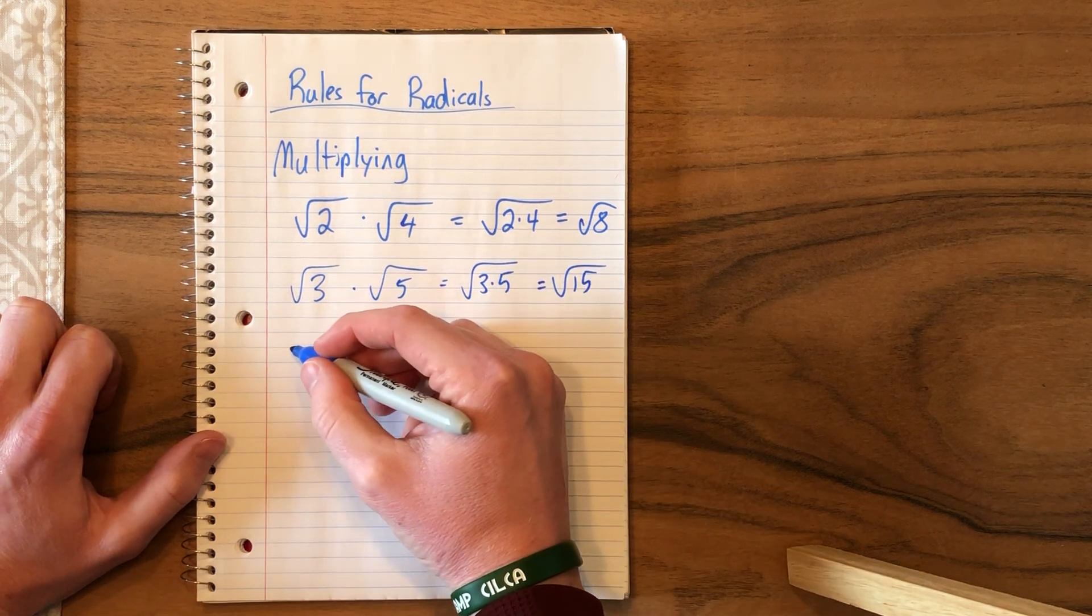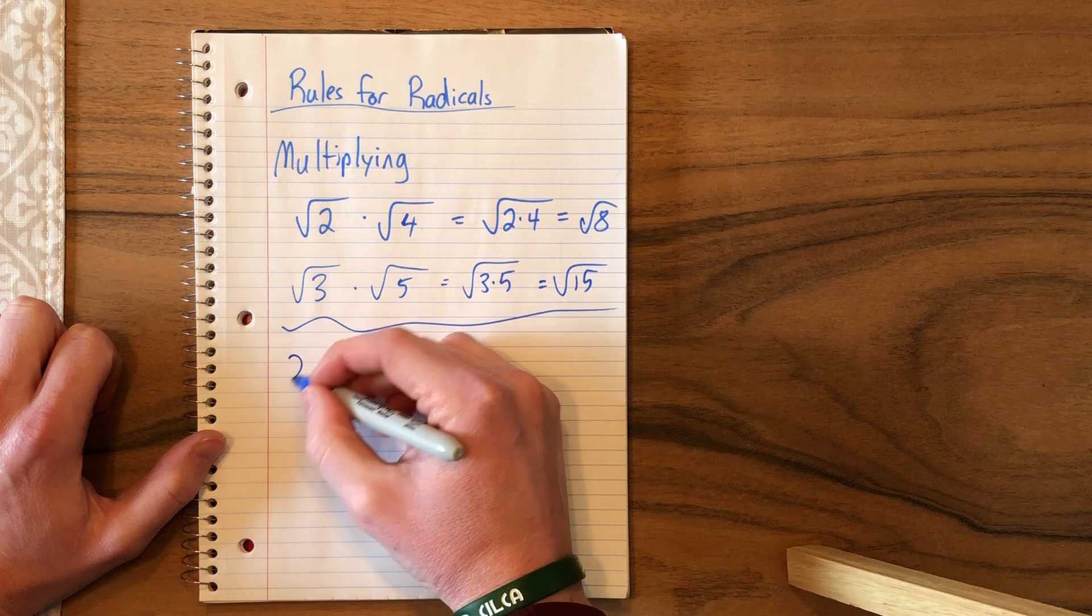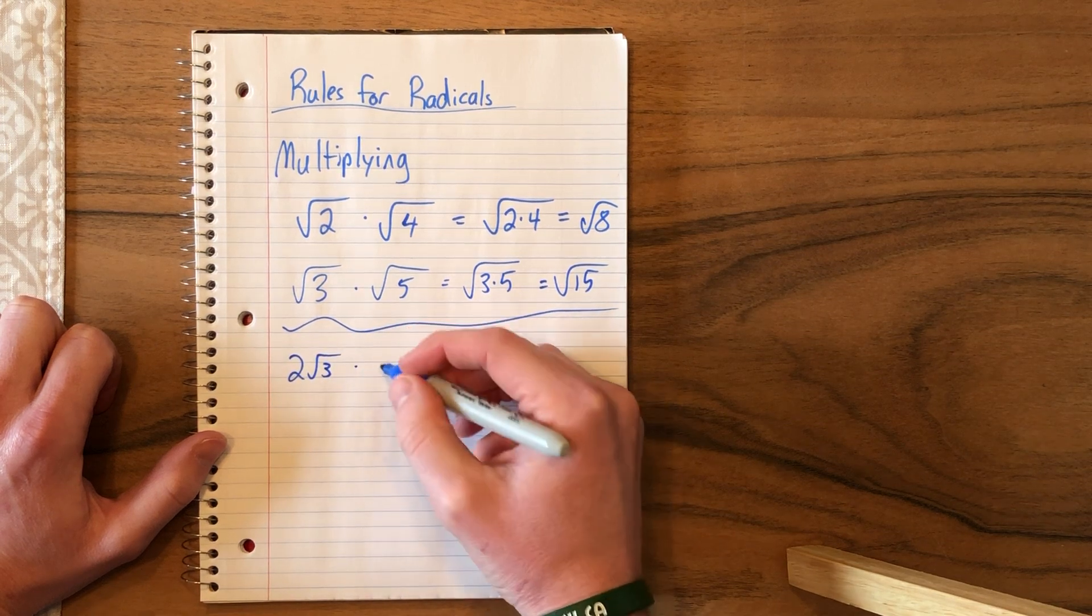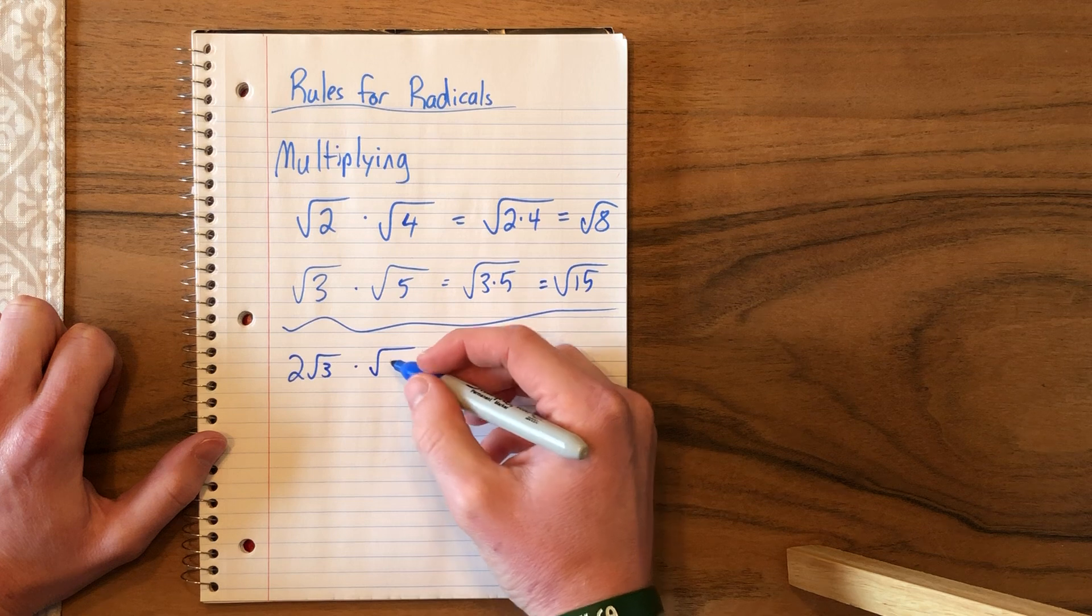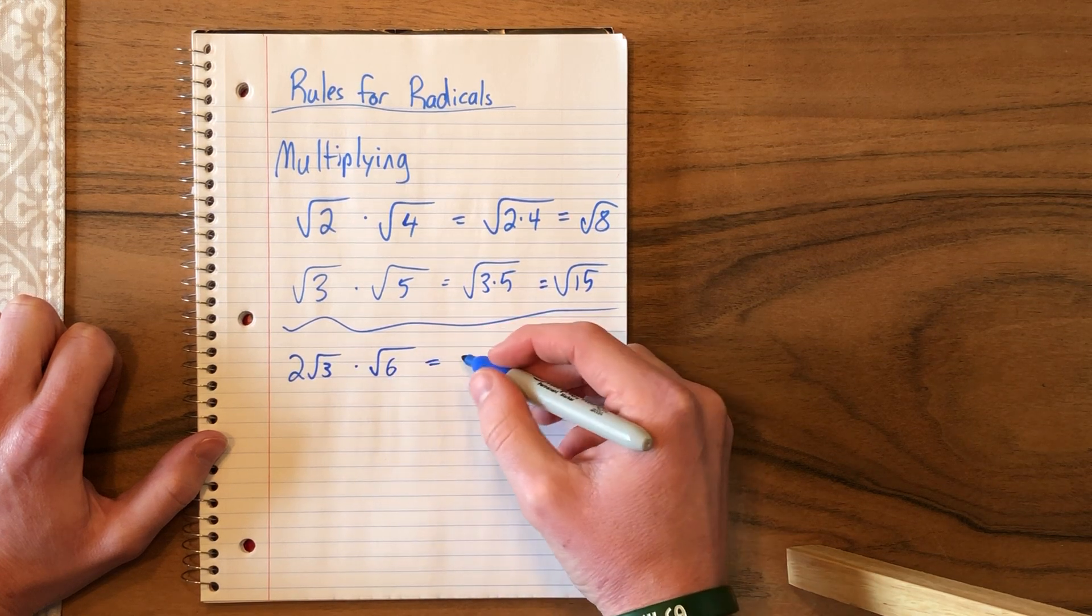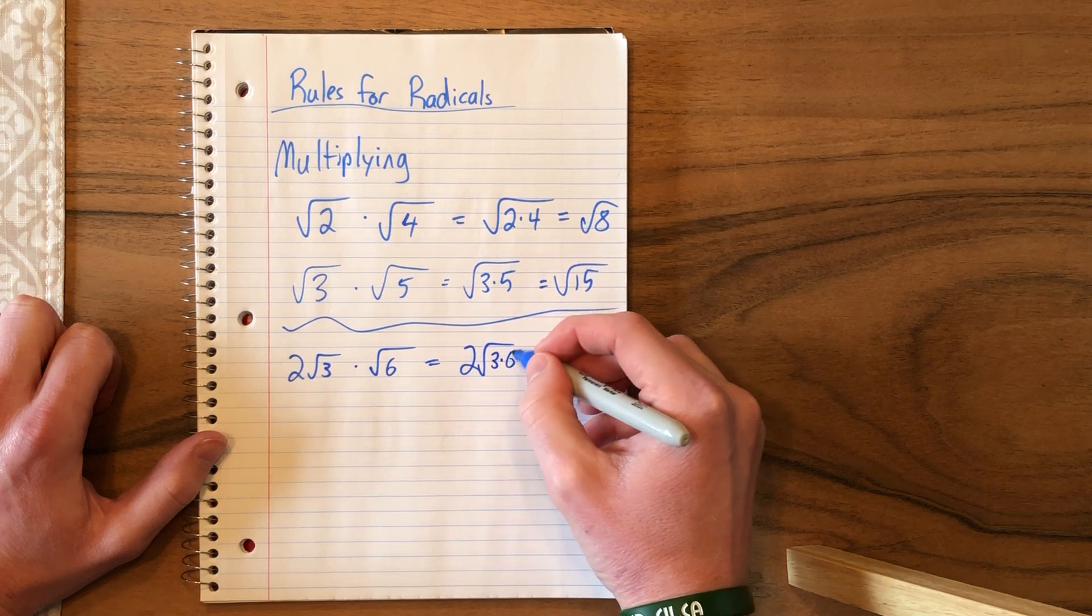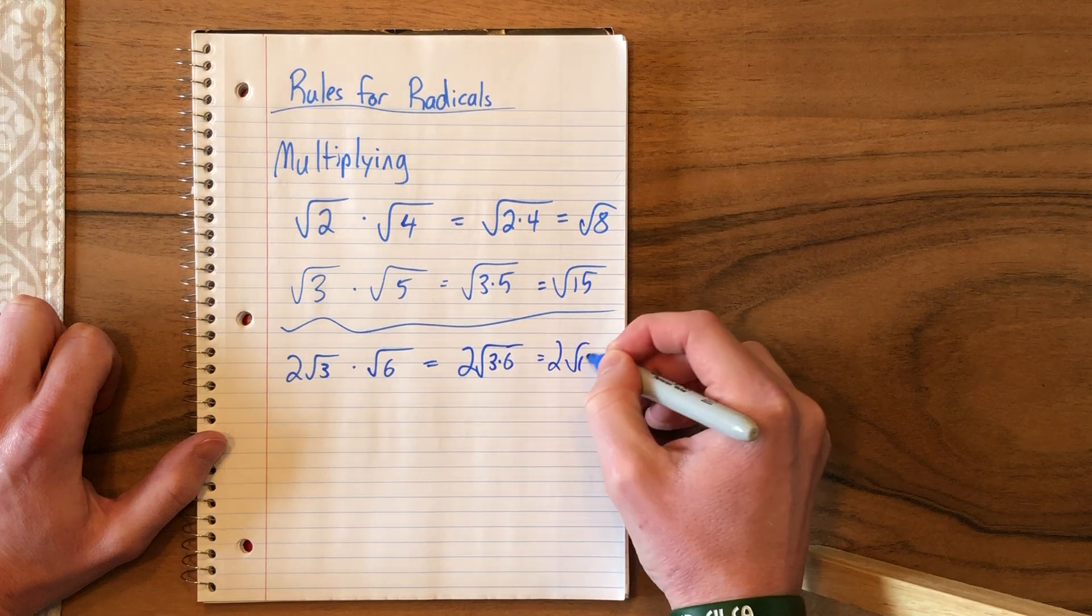If we're multiplying a coefficient, the coefficient is the number in front, so if we had 2 root 3, if we multiply by a radical, then you multiply the numbers underneath, so you really have 2 times the square root of 3 times 6, or 2 root 18.